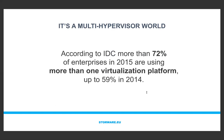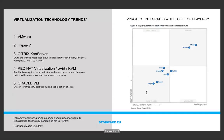We know that many customers are actually having more than one virtualization platform in their companies. In the current situation, VMware and Microsoft are the mainstream hypervisors. However, we see more and more customers moving towards Red Hat or Citrix-based hypervisors, and that is why we have focused our solution mostly on those platforms.